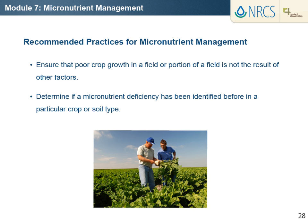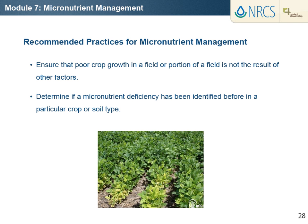Diagnosing and correcting micronutrient deficiencies can be complicated. Examples of complications include reliability issues associated with soil and plant tissue testing for micronutrients in some regions like the Midwest, the large variety of conditions that affect micronutrient supply, and the large variety of fertilizer sources. For these reasons, the following steps are suggested for identifying and correcting micronutrient deficiencies. Ensure that poor crop growth in a field or portion of a field is not the result of a macronutrient or secondary nutrient deficiency, compaction, excess moisture, drought, salinity, pest problem, or herbicide injury.